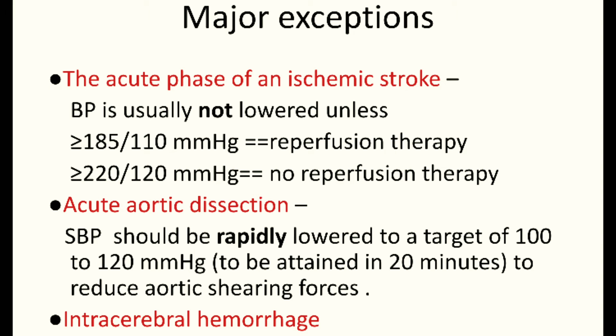In acute aortic dissection, unlike other hypertensive emergencies, systolic blood pressure should be rapidly lowered to a target of 100 to 120 mmHg, ideally over 20 minutes, to reduce aortic shearing forces.